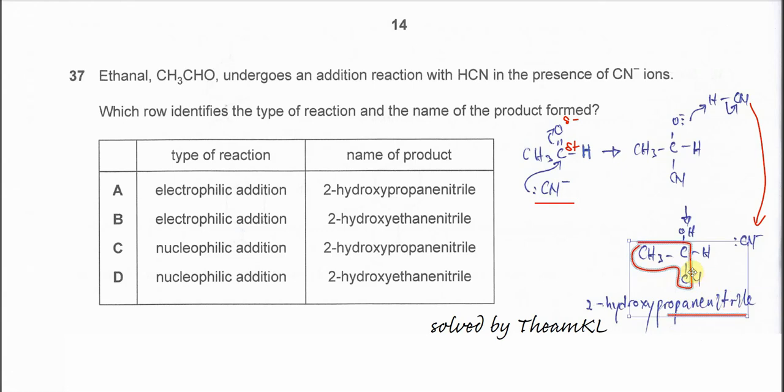And the first carbon is this carbon. And this carbon, therefore, is the second carbon. The second carbon now with OH, so therefore we call this 2-hydroxy propane nitrate. So this is a substituent.